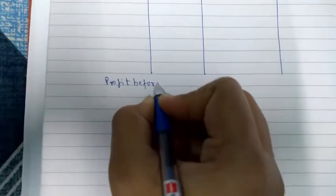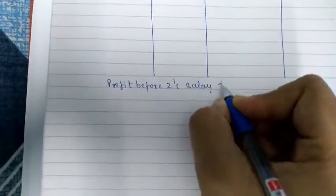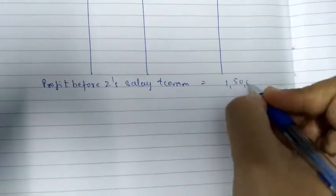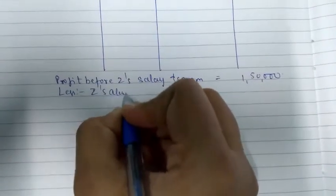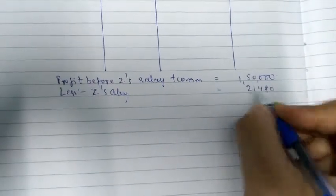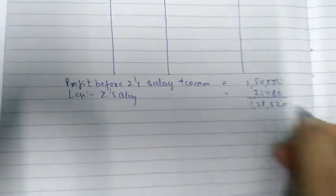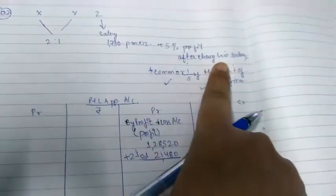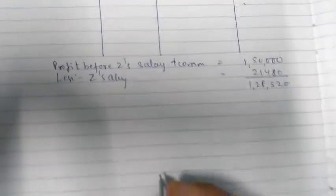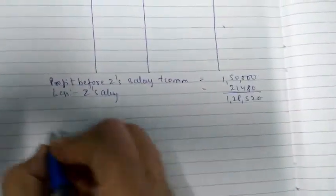Now let's look at working notes. The profit before Z's salary and commission was 1,50,000. If we minus Z's salary, which is 21,480, then the profit after becomes 1,28,520. Now, what was said? On the profit after, commission will be given. We wrote above that 5% profit after charging his salary.